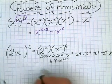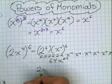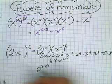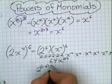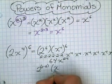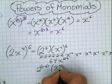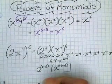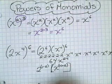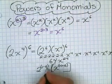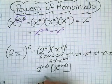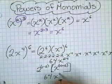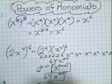The shortcut would be 2 — the exponent of the 2 is 1, so 1 times 6, because there's only one 2. Then multiply that by x to the fourth power times 6, which would give you 24. And now we have 2 to the sixth power, which as we said was 64, times x to the 24th power. And here's your final answer.